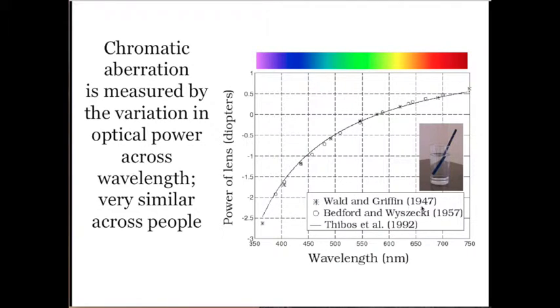And these data come from two different sources. Wald and Griffin. Wald, a Nobel laureate, worked with Griffin and made these measurements. Bedford and Wyszecki, two of the great color scientists, made the measurements 10 years later. Thibos made a calculation about what this should be in 1992.